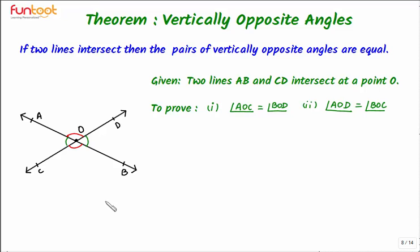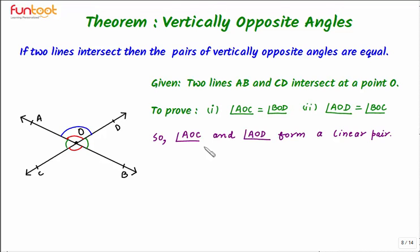Let's see the approach for proving this theorem. Let's take one pair of vertically opposite angles — the pair marked in green. If we take angle AOC from this pair, then let's take its adjacent angle, angle AOD, which is marked in blue here. These two angles form a linear pair. So angle AOC and angle AOD form a linear pair.